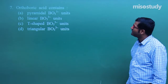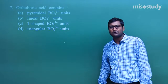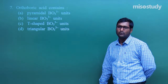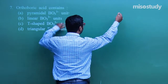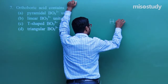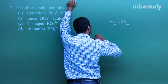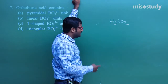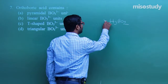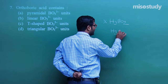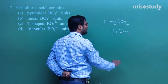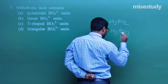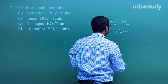Question number 7: orthoboric acid contains what? The formula of orthoboric acid is H₃BO₃. If we draw the structure, it can be written as BO₃ with B at center and three O atoms around it — forming a triangular shape. So orthoboric acid contains triangular BO₃³⁻ units.